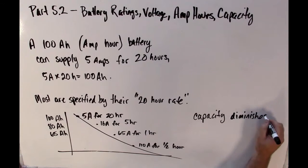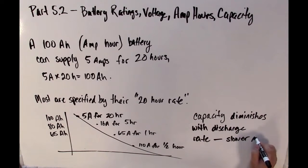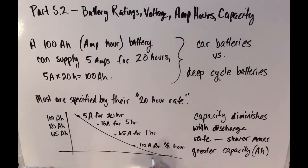For clarity, I should say that the horizontal axis on this curve is time, and the vertical axis is capacity. Capacity, you could also think of that as just total charge that can be stored in the battery.